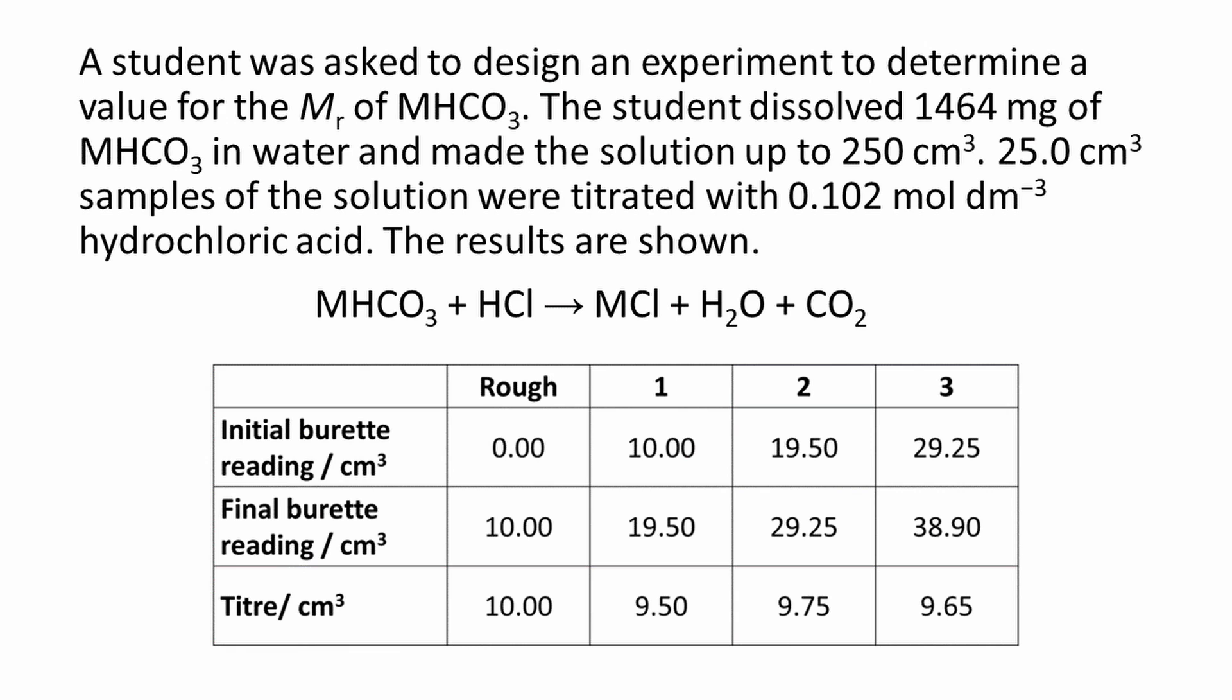Here's the question. A student was asked to design an experiment to determine a value for the MR of MHCO3. The student dissolved 1464 mg of MHCO3 in water and made the solution up to 250 cm³. 25 cm³ samples of the solution were titrated with 0.102 mol per dm³ hydrochloric acid. The balanced equation is given as well as the results table.